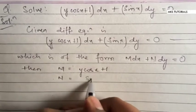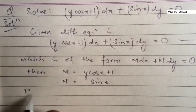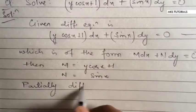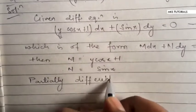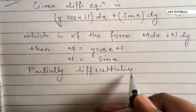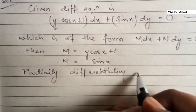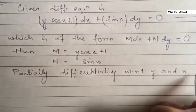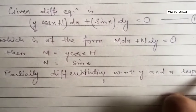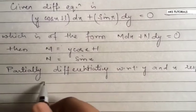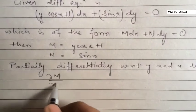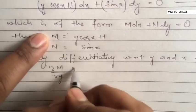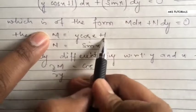Now, partially differentiating with respect to y and x respectively, we get del M upon del y. When x is constant, differentiating M gives cos x. The constant term will be 0, and del N upon del x equals cos x.